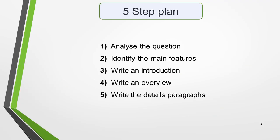There are five steps to writing a high-scoring academic task one essay. One, analyze the question. Two, identify the main features of the graphic. Three, write an introduction. Four, write an overview. And five, write the detailed paragraphs.